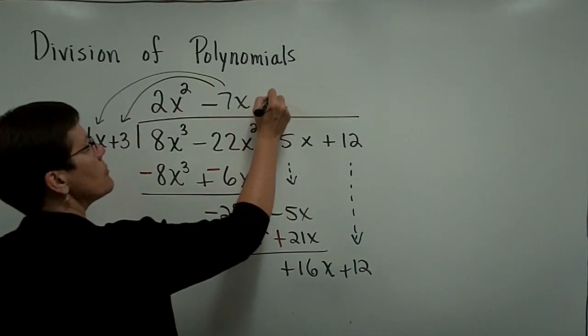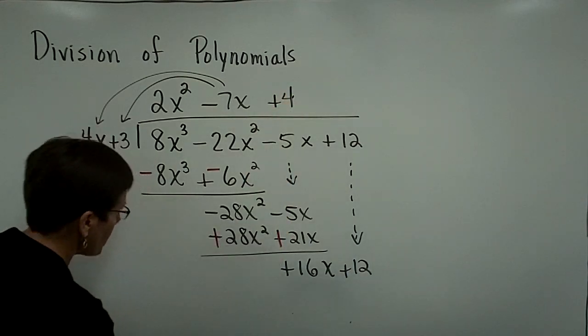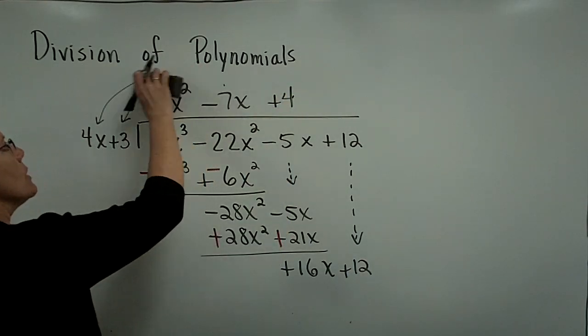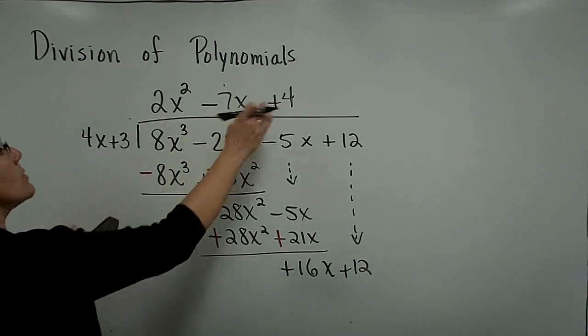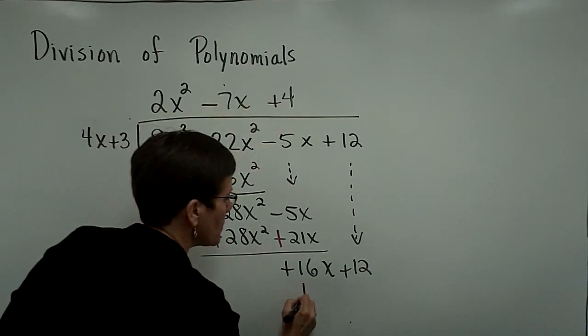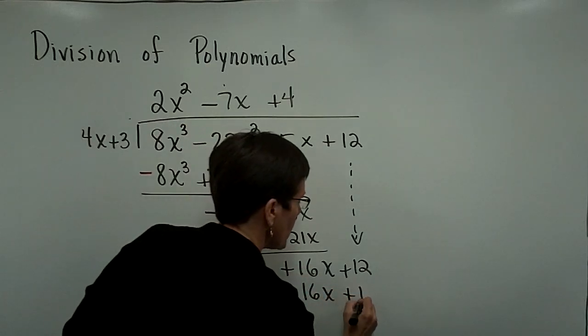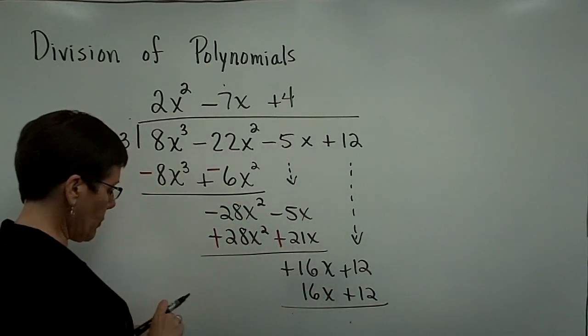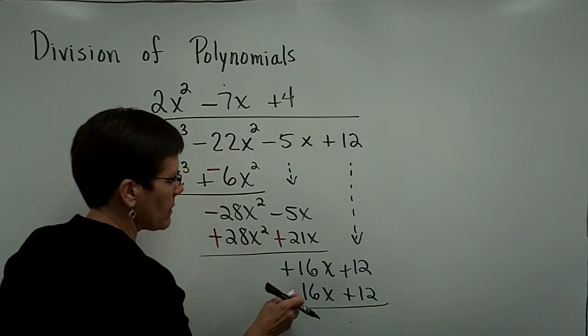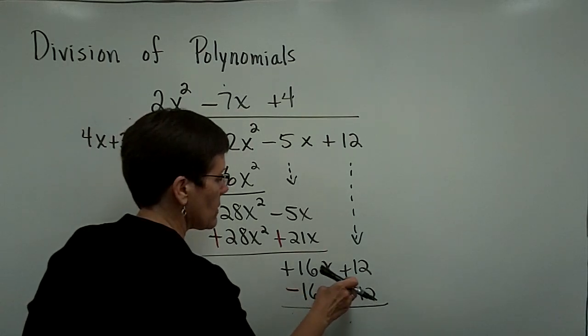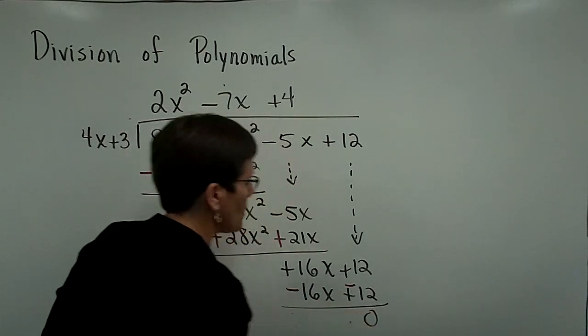Therefore, I need a positive 4 up here as my last term in my solution, because this 4 times the 4x gives me 16x exactly, and 4 times 3 gives me 12. And so to complete this, I have to subtract this, and so I change the signs and change the signs, and I have a remainder of 0.